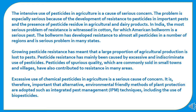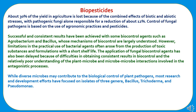Excessive use of chemical pesticides in agriculture is a serious cause of concern. It is therefore important that alternative, environmentally friendly methods of plant protection are adopted, such as Integrated Pest Management (IPM) techniques including the use of biopesticides. About 30 percent of yield in agriculture is lost because of the combined effects of biotic and abiotic stresses, with pathogenic fungi alone responsible for a reduction of about 12 percent.